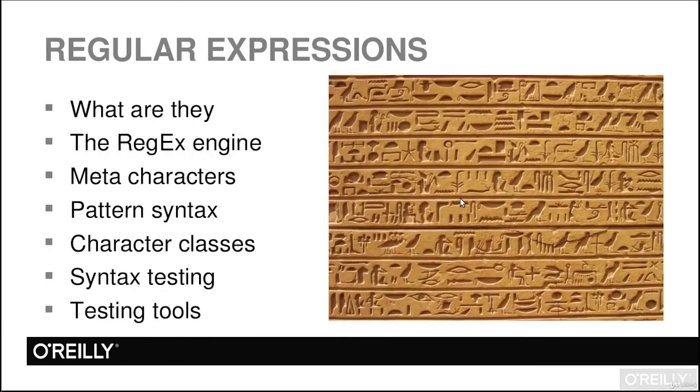We're starting a new section on regular expressions. Regular expressions make it possible for a parsing engine — in this case the Perl parser — to take a look at a set of characters and match to a given pattern. If the pattern matches, we have a pattern match. Regular expressions are like wildcards on steroids. In this segment we'll talk about the regex engine, meta characters, pattern matching, character classes, and a testing tool. We'll look at an example right away using the Regex Tester Chrome extension.